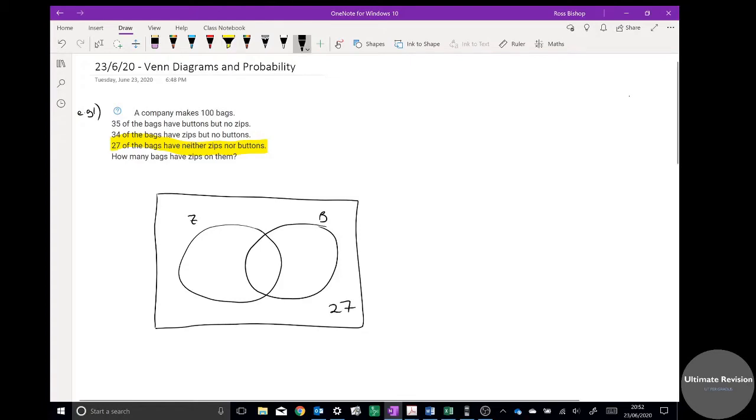27 of the bags neither have zips nor buttons, so 27 is going to go on the outside there. The next one, it says 34 of the bags have zips but no buttons, so zips but no buttons is going to go in there. That's in the zip circle but outside the button circle. And the final one, 35 have buttons but no zips. Buttons but no zips is going to go in here, in the button circle but outside the zip circle.